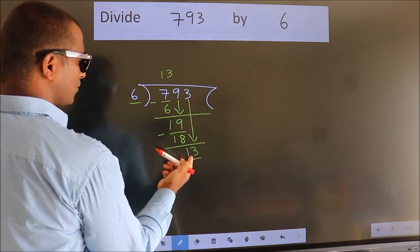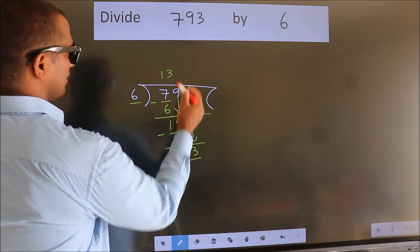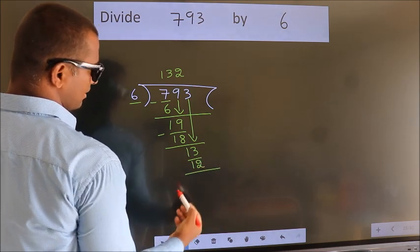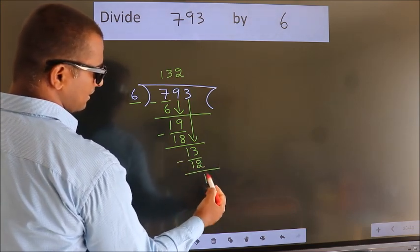A number close to 13 in the 6 table is 6 twos, 12. Now we subtract. We get 1.